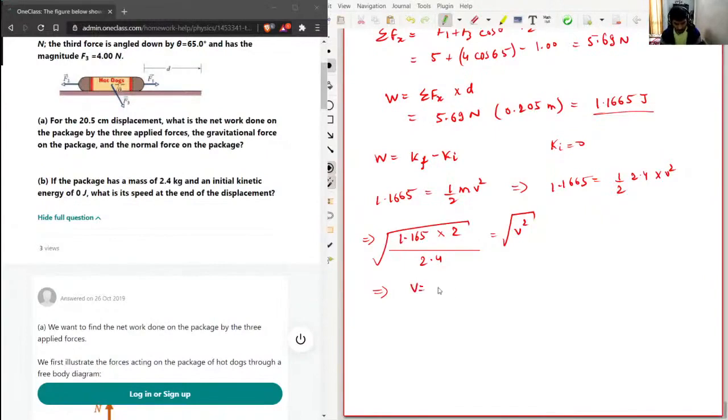And then square root of answer 0.9859. So velocity will be 0.9859 meter per second.